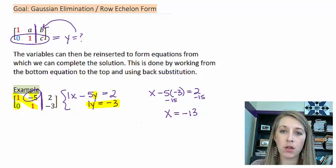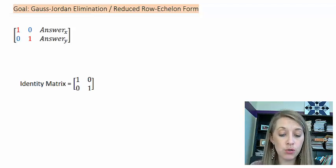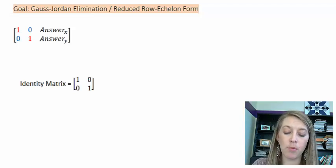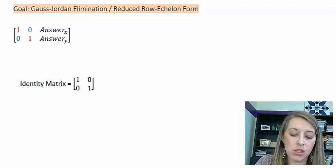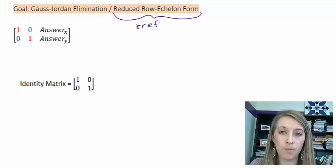We're going to take this and do it one more step, and this is called Gauss-Jordan elimination or reduced row echelon form. That's a lot of words there, so mostly I'm going to summarize this and call it RREF, reduced row echelon form.